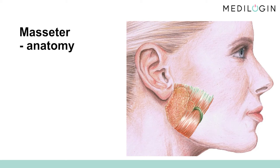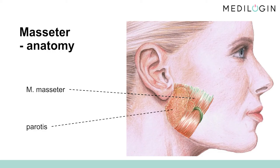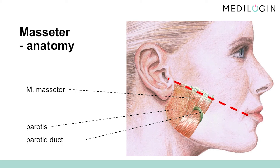The aim of both indications — aesthetic and therapeutic — is to inhibit the activity of the masseter muscle. The masseter muscle attaches to the zygomatic arch and inserts at the angle of the mandible. It is mainly responsible for the closure of the jaw, but also causes lateral and longitudinal movements of the lower jaw. In the dorsal area lies the parotid gland, in which the facial nerve divides, and from which the parotid duct emerges. When treating the masseter, you can form a line of reference between the tragus and the lateral corner of the mouth. Below this line lies the masseter muscle.